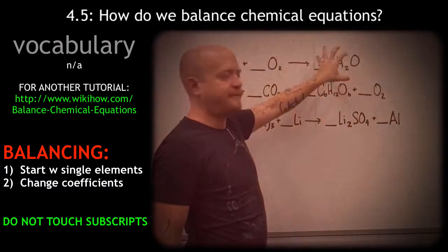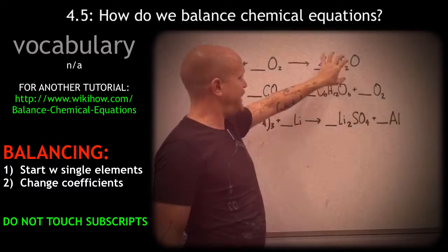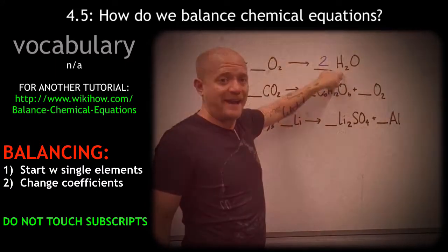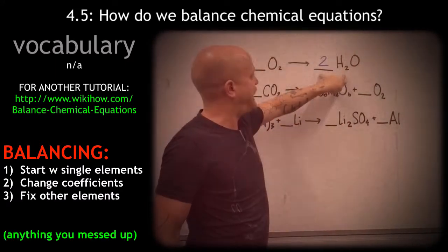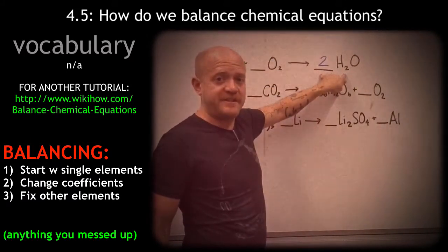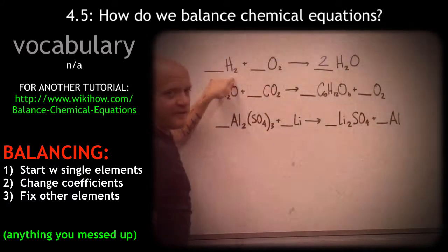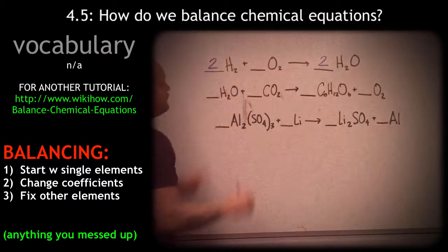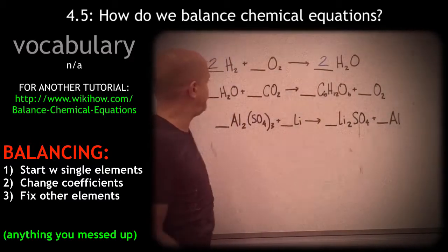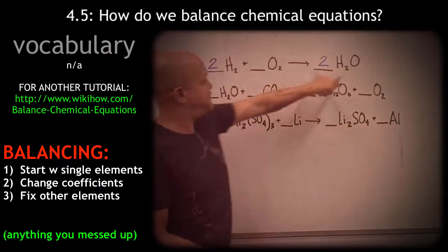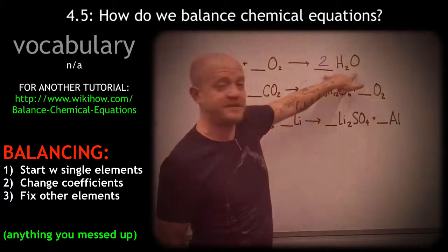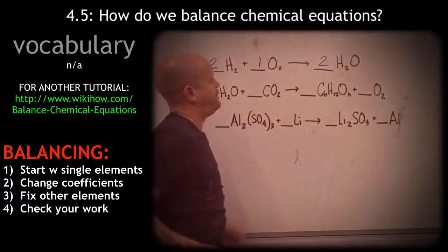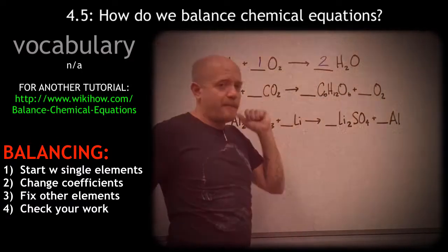However, when you place a number in front of a compound, you may have changed the other atoms. So let's check the hydrogens — we now have four hydrogens here and only two hydrogens here. We've got to put a two right there. Now we have four hydrogens and four hydrogens, two oxygens and two oxygens. This coefficient of one is not mandatory to write.